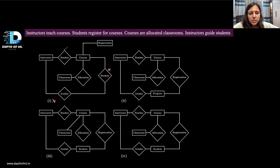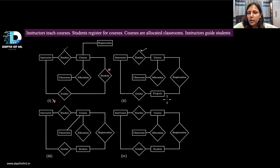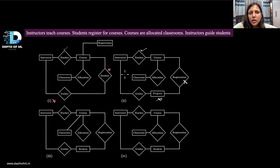Looking at the second option: instructor teaches course — correct. But here, 'project' is used as an entity with a registration relationship to course, with no mention of a student entity at all. Student should register for the course. Also, instructors are guiding projects instead of students. So this option is also incorrect.